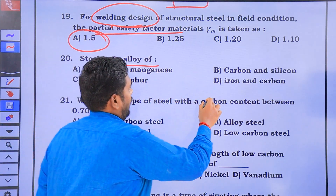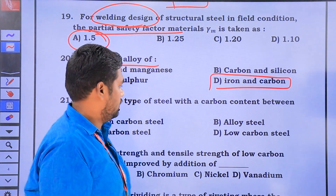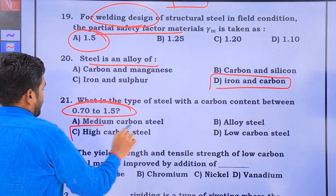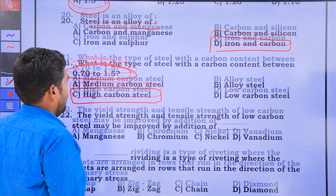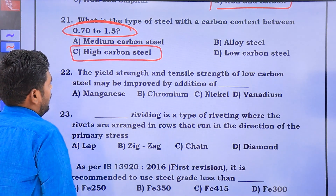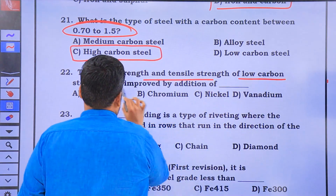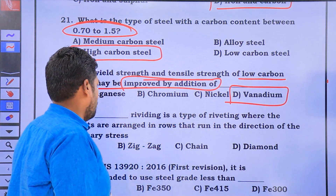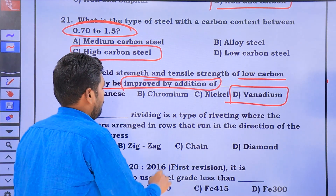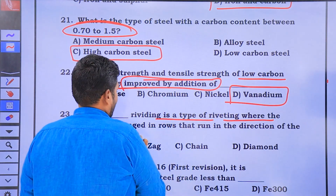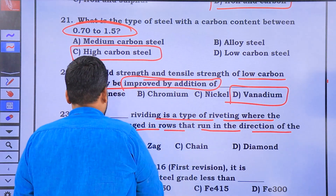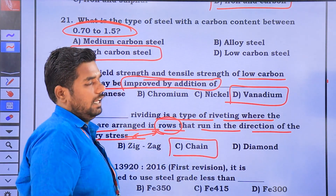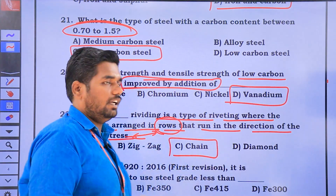Steel is an alloy of iron and carbon. The type of steel with carbon content between 0.70% to 1.5% is high carbon steel. The riveting type where rivets are arranged in a row along the direction of the primary stress is chain riveting. The chain arrangement is the answer, as zigzag is irregular and diamond riveting is different.